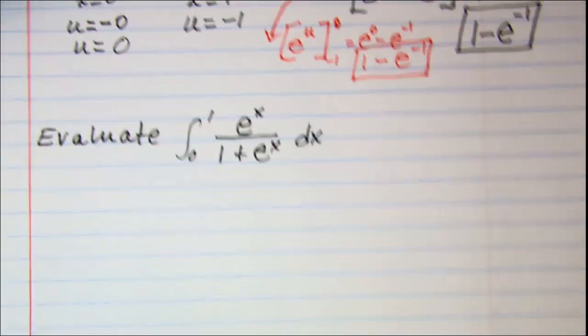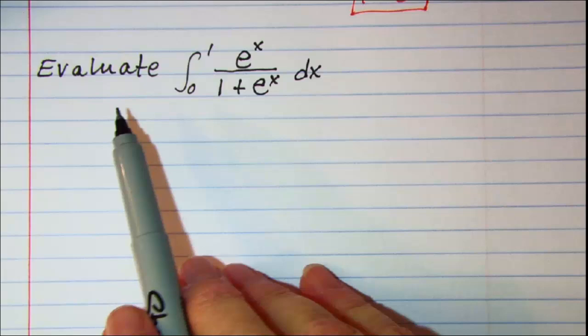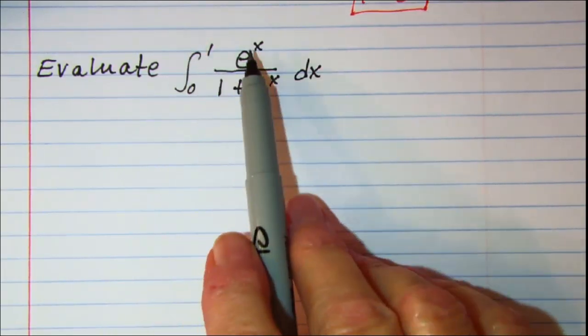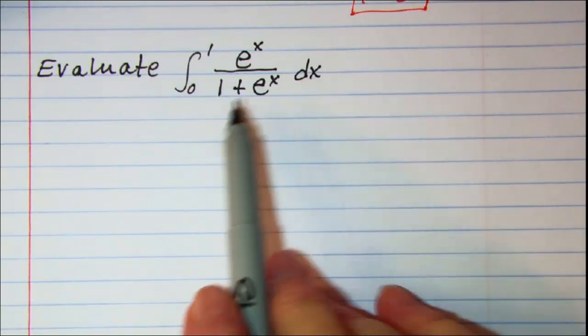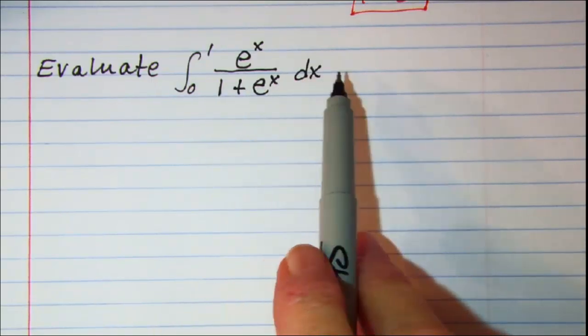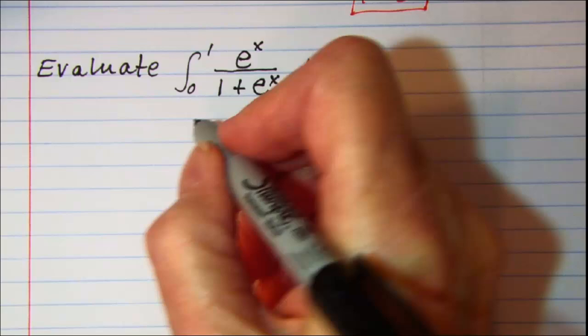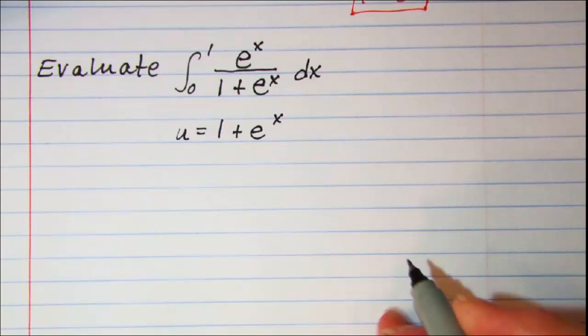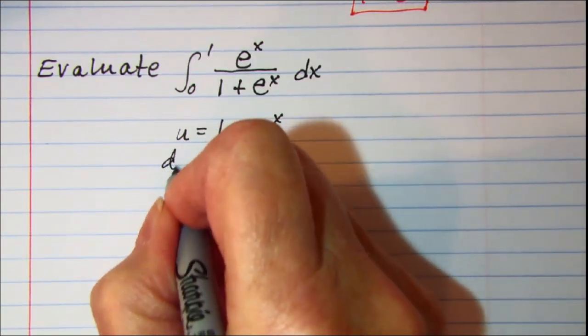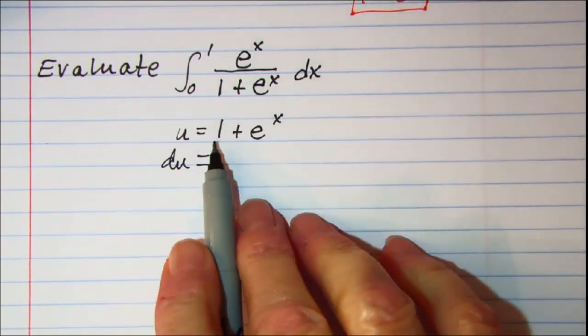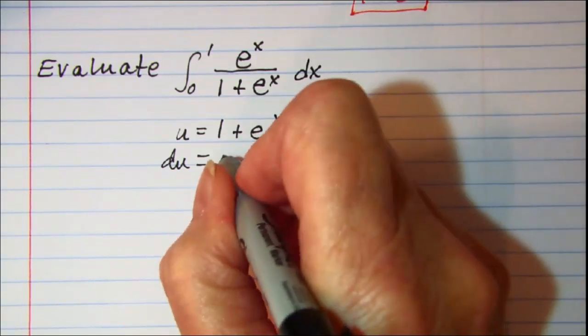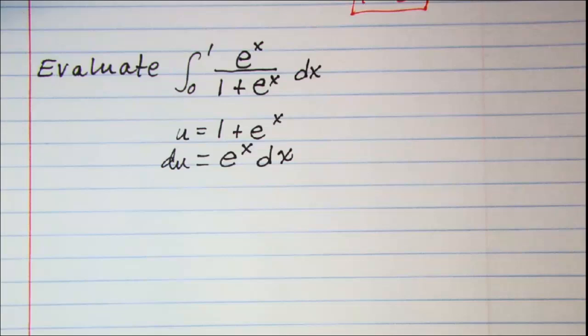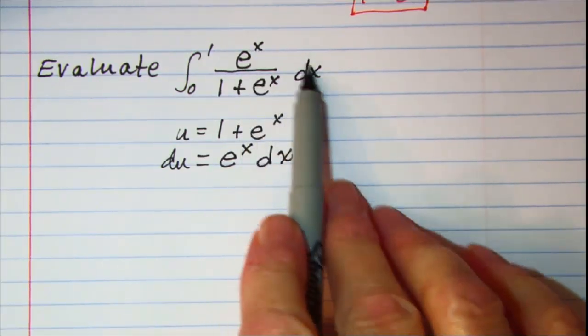Let's do another example. On this one we're asked to evaluate the integral from 0 to 1 of e to the x divided by 1 plus e to the x dx. Let's let u equal 1 plus e to the x. Then du will be e to the x dx, and there's my e to the x dx.